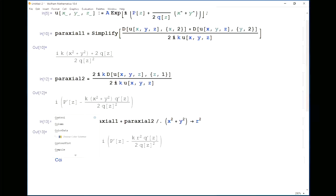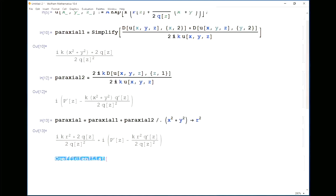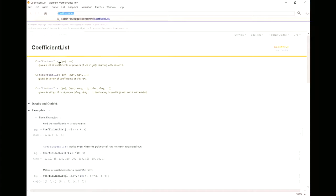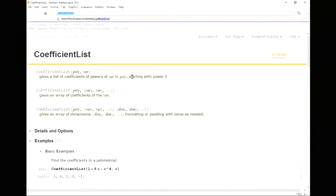To find the coefficients of that polynomial, we have to use a function called coefficient list. If you're unsure about how to use coefficient list, highlight it and press F1. And it says that we're going to get a list of coefficients of powers of the variable, starting with the power 0. So it's really simple.